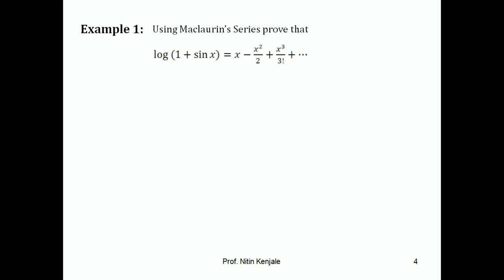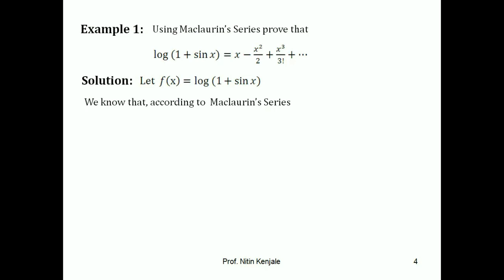Now let us see example number one. Here we have to use the Maclaurin series to prove that log(1 + sin x) equals x minus x²/2 plus x³/3 factorial and so on. In the solution, we first let f(x) as log(1 + sin x). According to Maclaurin series, f(x) can be written as an infinite series in ascending integral powers of x as f(0) plus x into f'(0) plus x²/2 factorial into f''(0) plus x³/3 factorial into f'''(0) and so on.